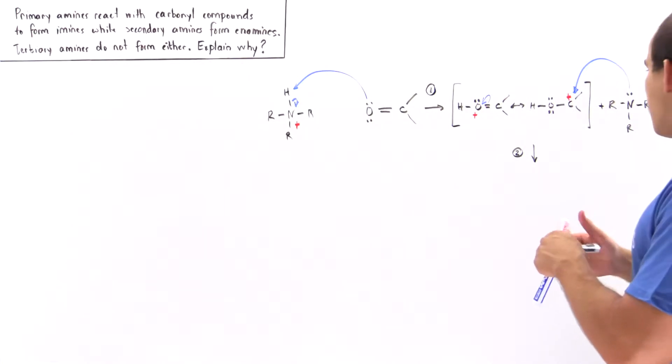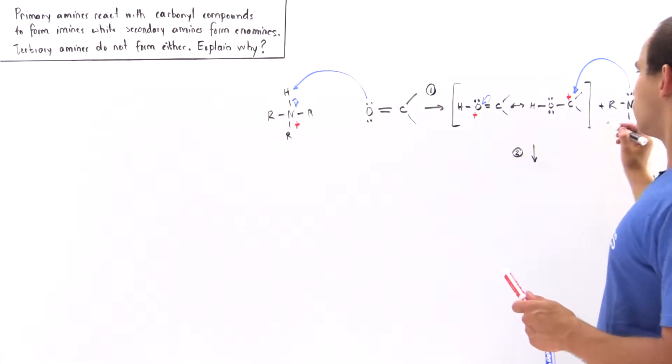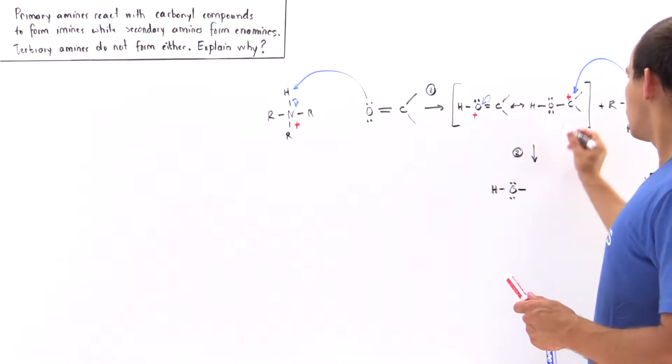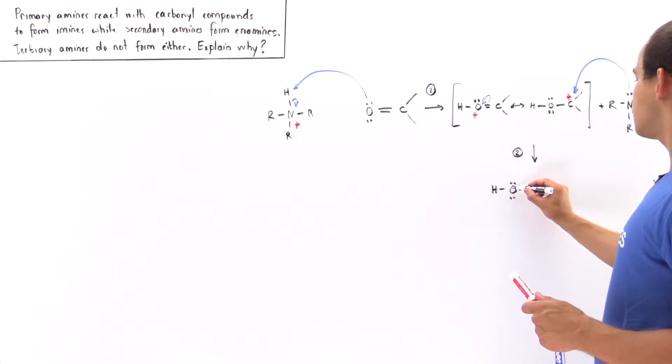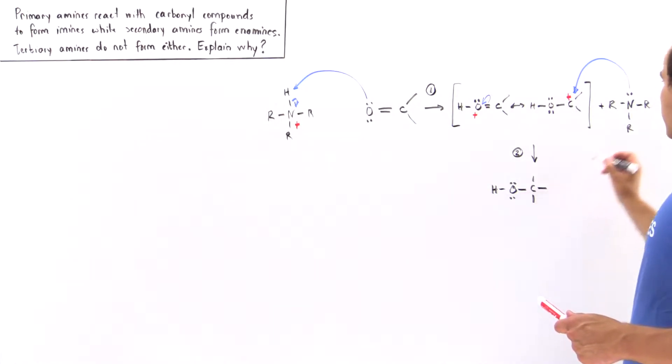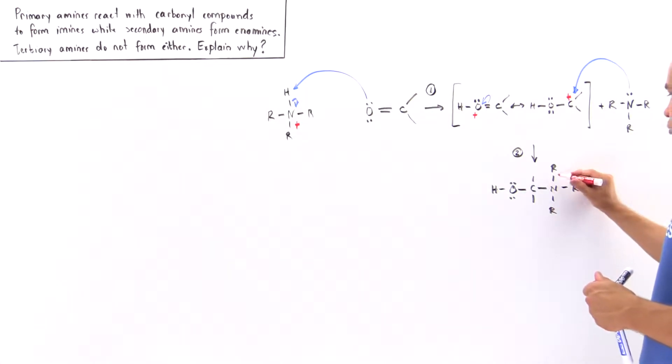So we form the following intermediate that contains a positive charge on this nitrogen. We have our H, we have our oxygen which has two pairs of electrons, we have the bond between carbon and oxygen, and now we have two groups here, and now we form this bond between carbon and nitrogen, and this nitrogen also contains two R groups. We have a positive charge on this carbon here, and this is our intermediate that is formed in step two.